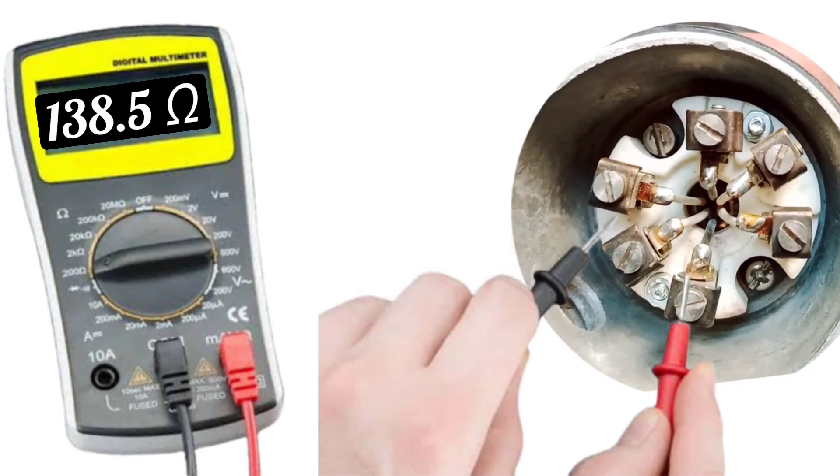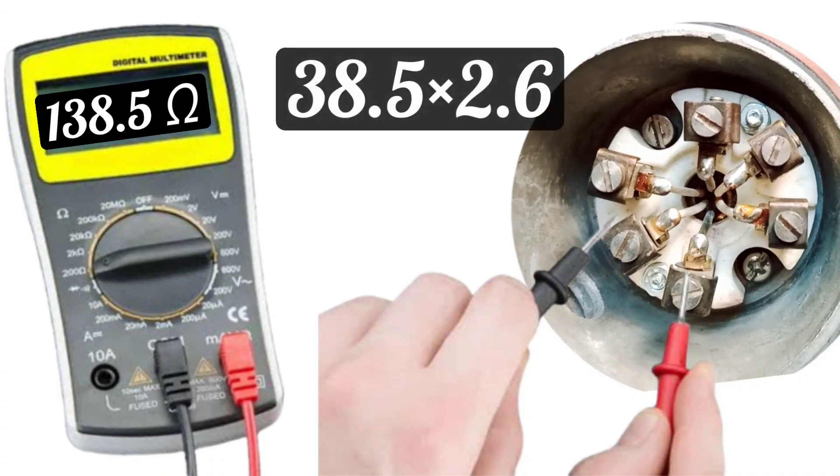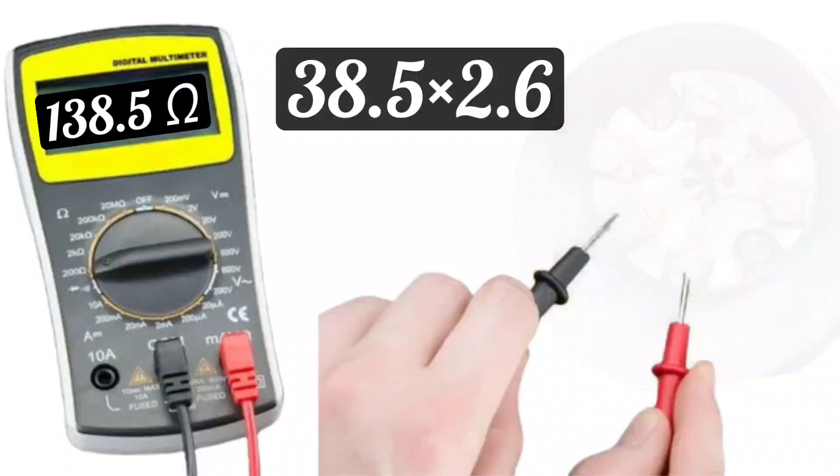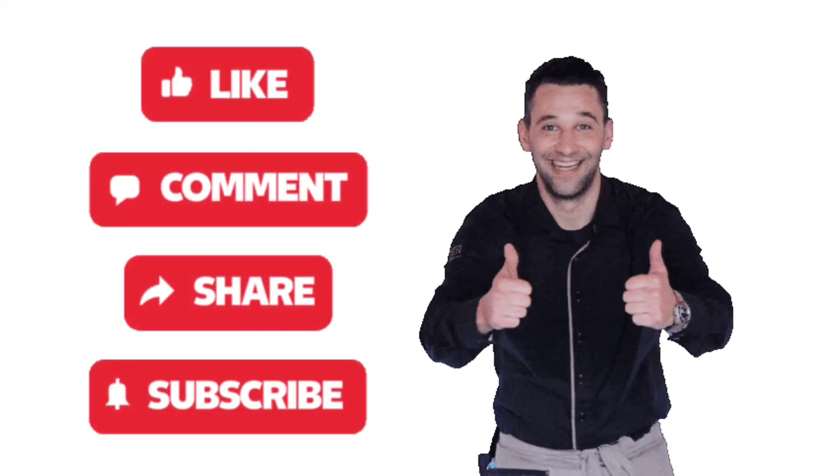If you multiply 38.5 by 2.6, then it will also be approximately 100 degrees Celsius. So it's very easy to calculate RTD temperature.